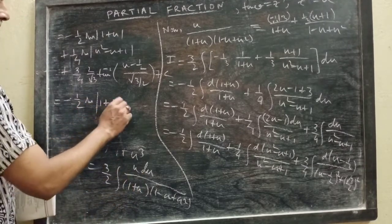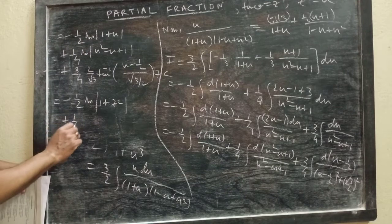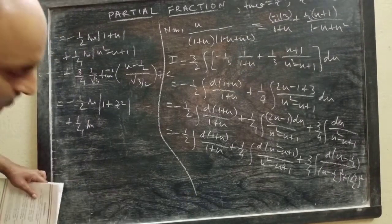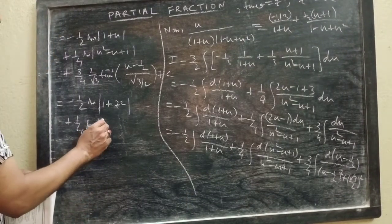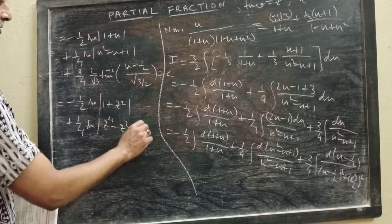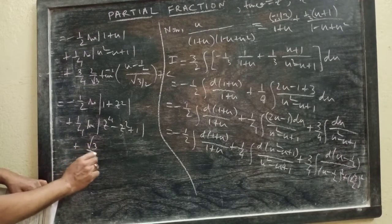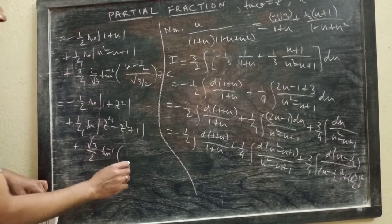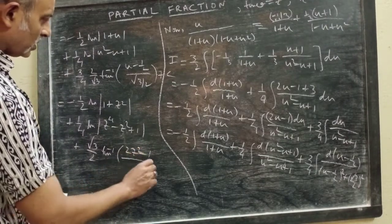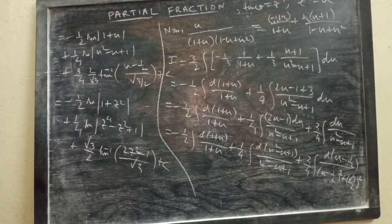u is z². So: −(1/2) ln|1 + z²|, plus (1/4) ln|z⁴ − z² + 1|, then (√3/2) · tan⁻¹((2u − 1)/√3), where u is z², so (2z² − 1)/√3 + C. Then we have to go back from z to tan θ.